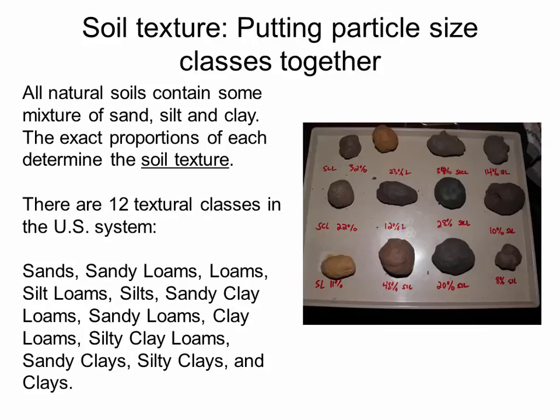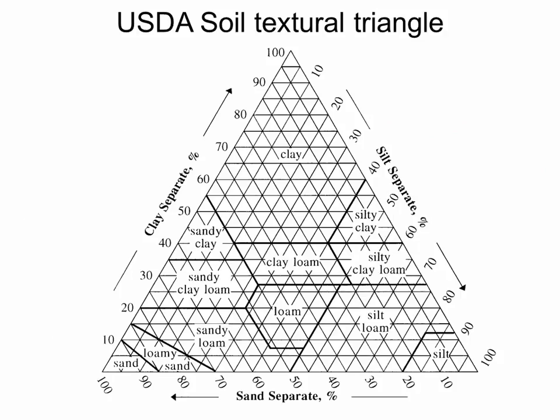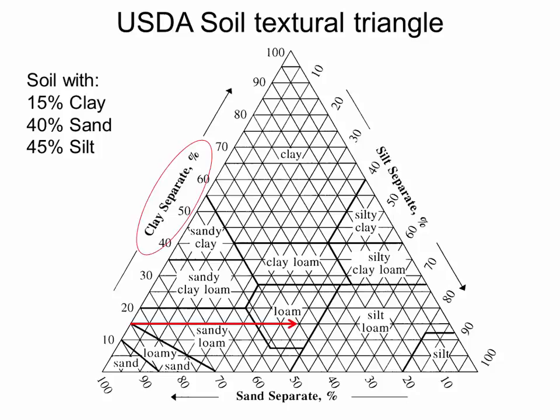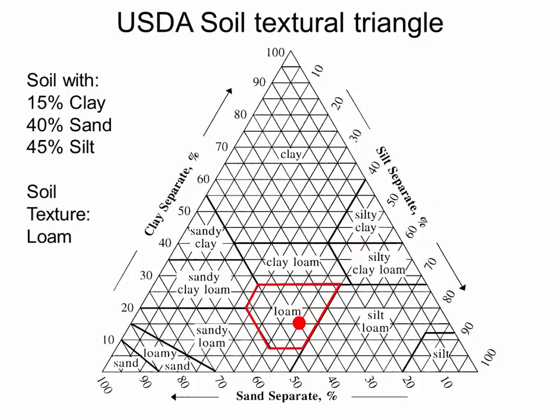We actually have all of these particle-size-dominant soils in Minnesota, and mixtures too. The soil textural triangle is where we put all three particle size classes together — sand, silt, and clay — and the percentages of these classes in a soil sample determine the textural class. In the U.S. system, we have 12 textural classes. Here's our USDA soil textural triangle. If you had a soil sample that was 15% clay, 40% sand, and 45% silt, you'd end up with a loam.